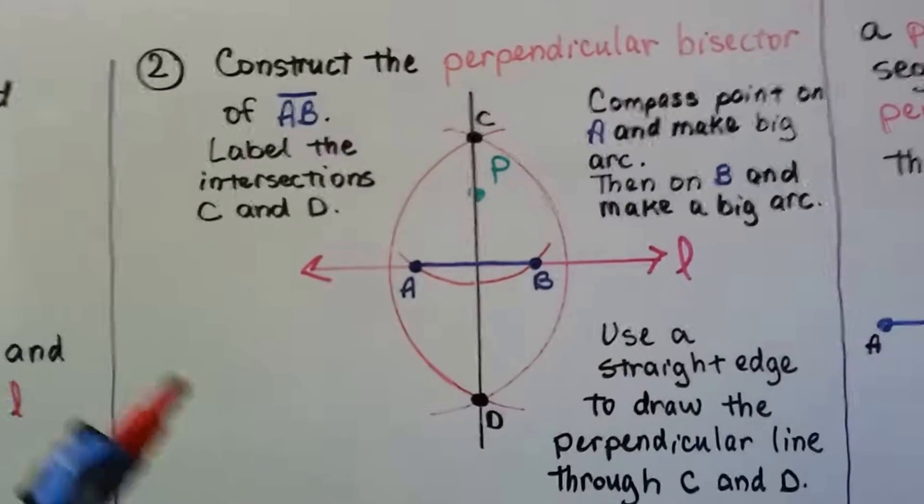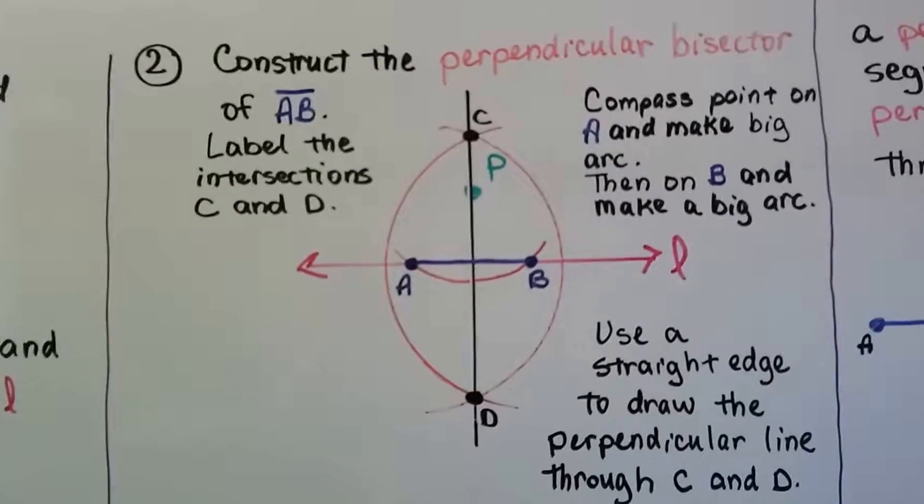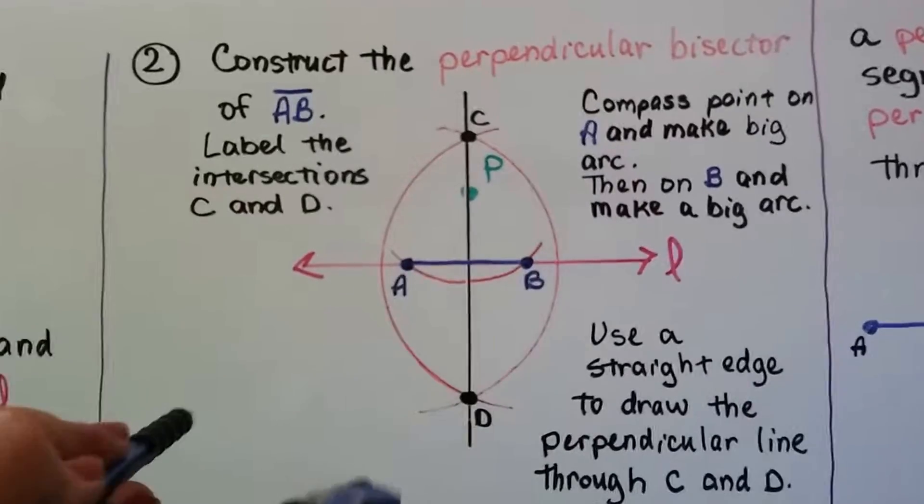So what we're doing is, from what we learned with the perpendicular bisector, we're just doing the same thing to make the perpendicular line.